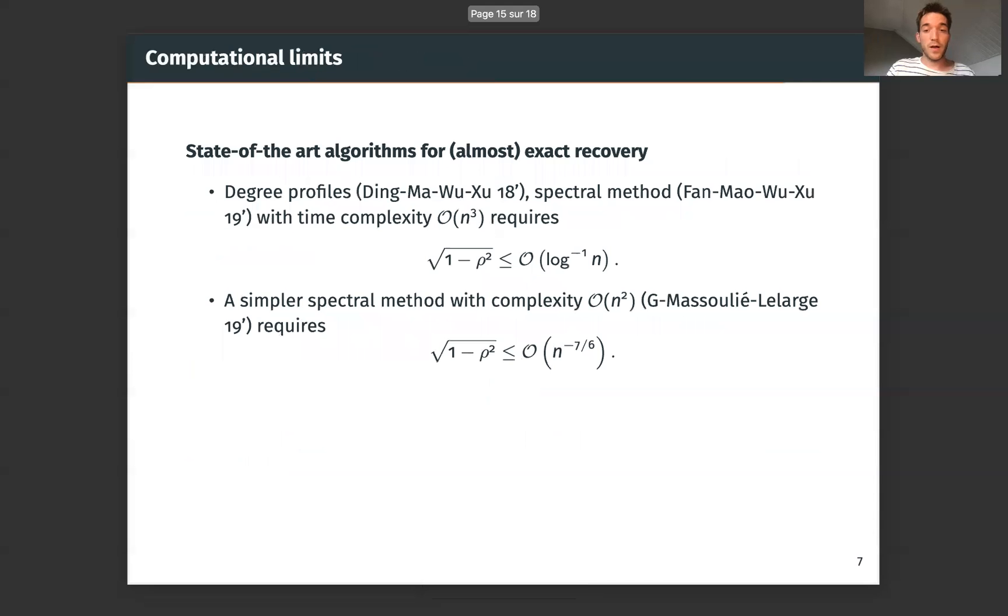So let's discuss a little bit the computational limits of our problem. We provably work in some settings and there are two families. So the first one is in time complexity O(n³), and it requires ρ to tend to one, as you can see here. Another simpler method with complexity n² requires ρ to tend to one, even with a higher rate you see.